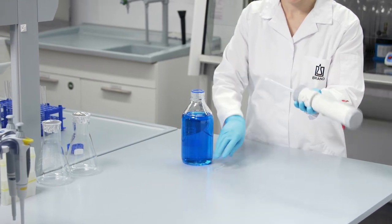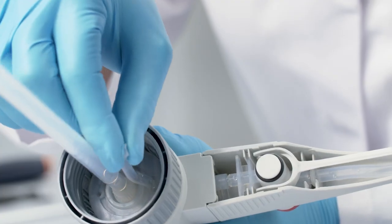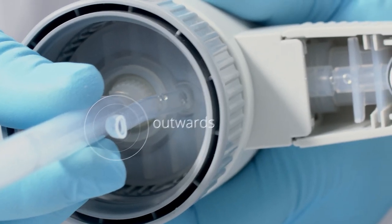If your Dispenset S is equipped with a recirculation valve, please also install the recirculation tube with the opening pointing outward.